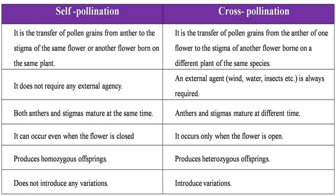The key differences between self- and cross-pollination: self-pollination does not require an external agency, and both anther and stigma mature at the same time. Cross-pollination requires an external agent such as wind, water, or insects, and the flower must be open. Self-pollination can occur even when the flower is closed. Self-pollination produces homozygous offspring and introduces no variation — you get the same thing. Cross-pollination produces heterozygous offspring and creates a variety of different characteristics.